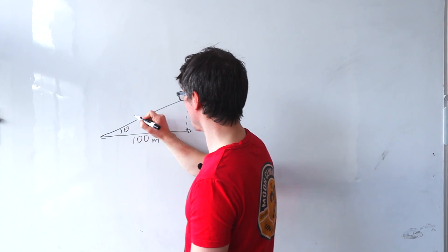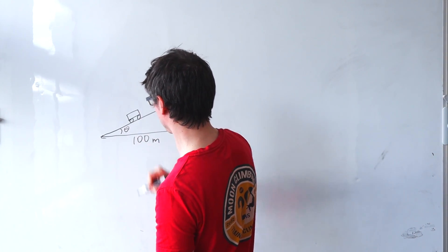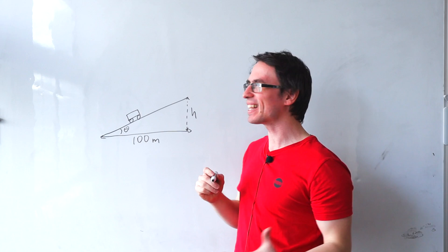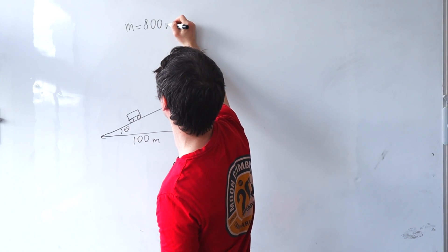Now let's put a little car along the slope like this. And I'm going to say that the mass of the car is 800 kilograms.